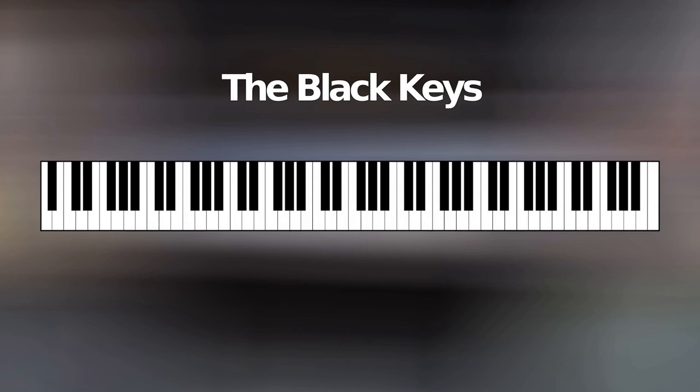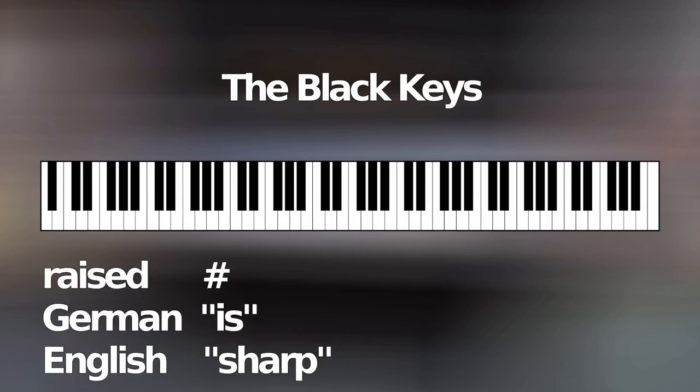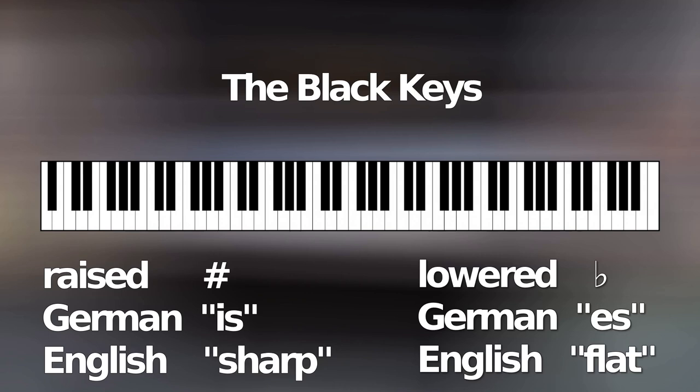And the good news is that their names are based on the surrounding key names depending on the scale. It is really simple as that. So if a note in a scale is raised by a semitone on a black key, the black key is given the suffix IS in German and SHARP in English. And if a note is lowered by a semitone, it is given the suffix ESS in German and FLAT in English.